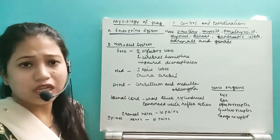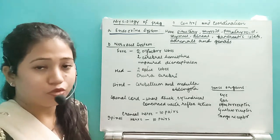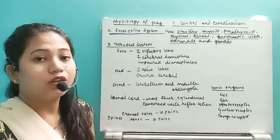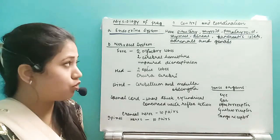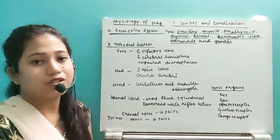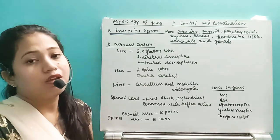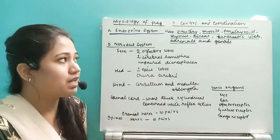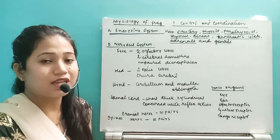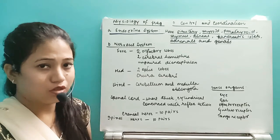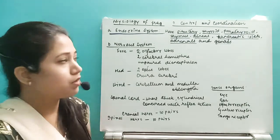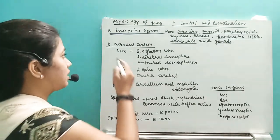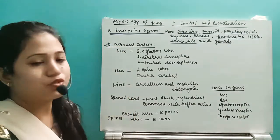We don't need the endocrine system in detail for the frog. For humans, we have a completely separate chapter called chemical control and integration, where we will study the endocrine glands and their hormones in detail. For the frog, just remember how many glands are present.